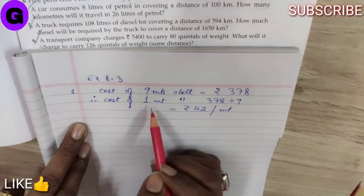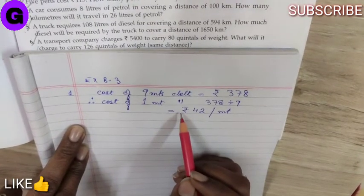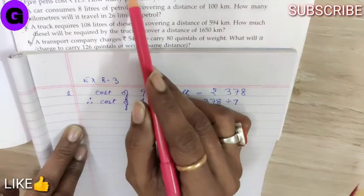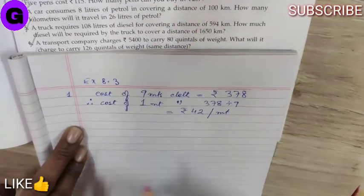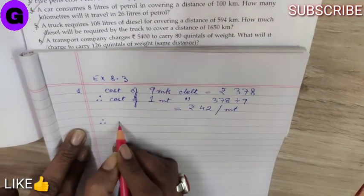Now, after evaluating the value of 1 meter of the cloth, we have to find the cost of 4 meter. It is very easy. Therefore,